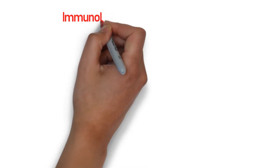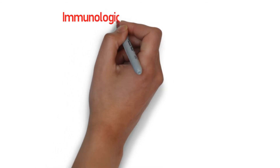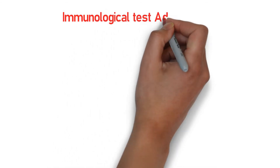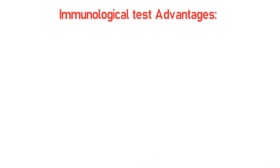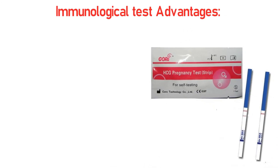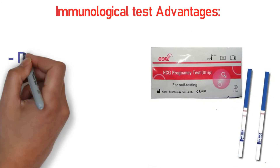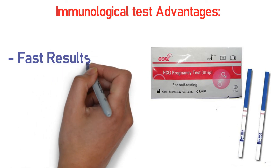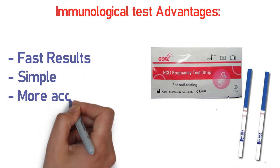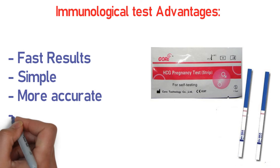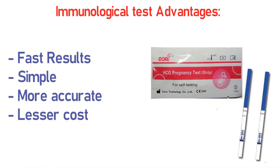Now let's talk about the advantages of the immunological test over the biological test. Number one: they give fast results. Number two: it is very simple. Number three: it is more accurate than the biological test. Number four: it is lesser in cost compared to the biological test.